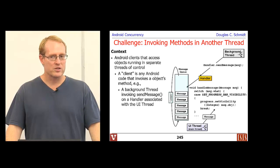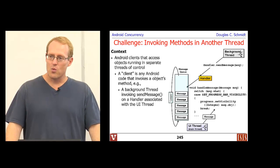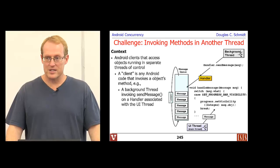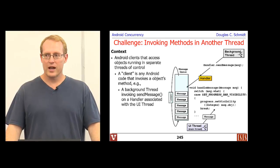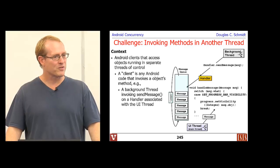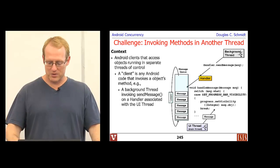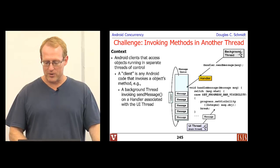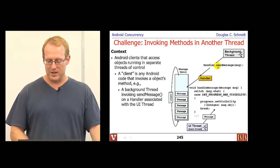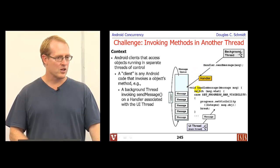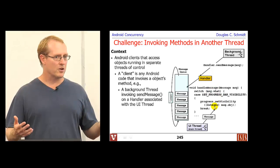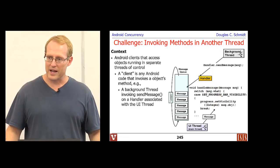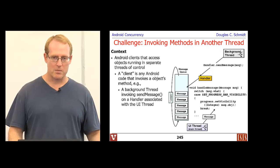We might have a situation where some background thread wants to invoke an operation — like send message — and pass a message to a handler that's connected to another thread of control. You can see here we have a background thread that says handler.sendMessage. The handler is associated with the UI thread, and the handleMessage method gets called back and does something that was requested or passed by the caller, which was a background thread.